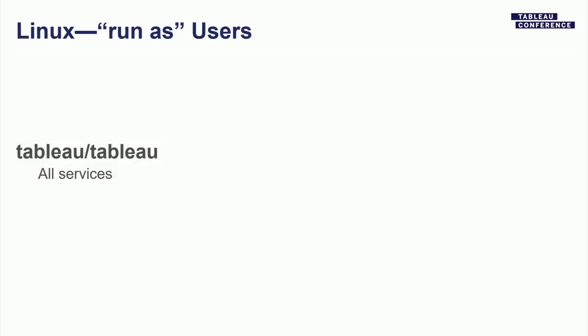Once services are installed and we have files on disk, we can start up our services. These have to run under certain credentials. On Linux, we create a single local account called Tableau and a single local group called Tableau, and all services run as that — a simple security model, local account, no network permissions, restricted to this local machine.